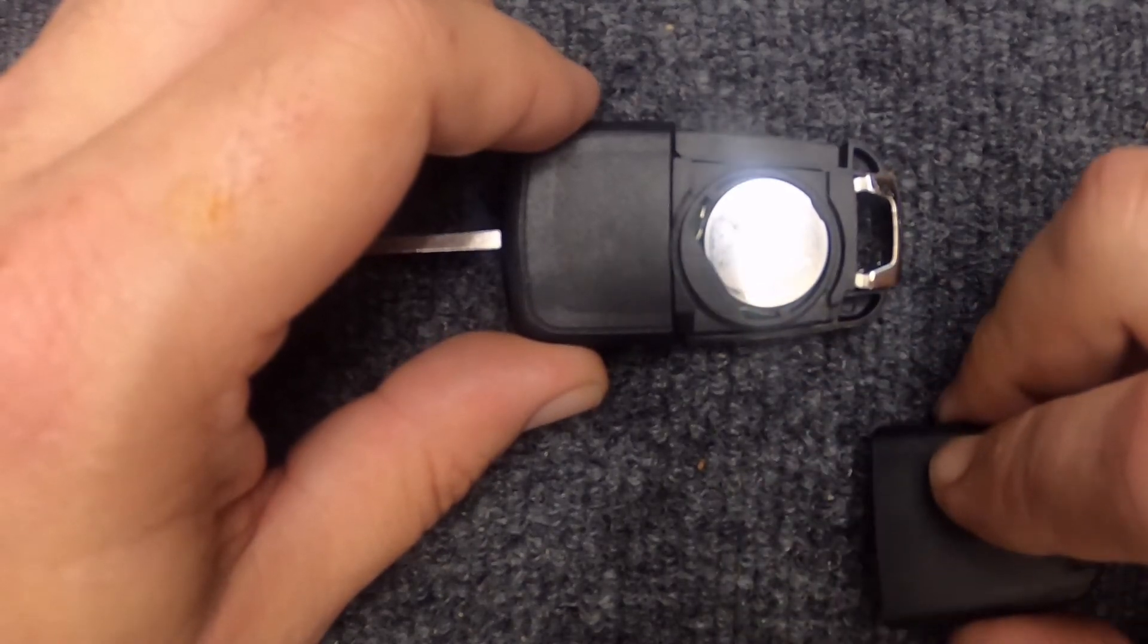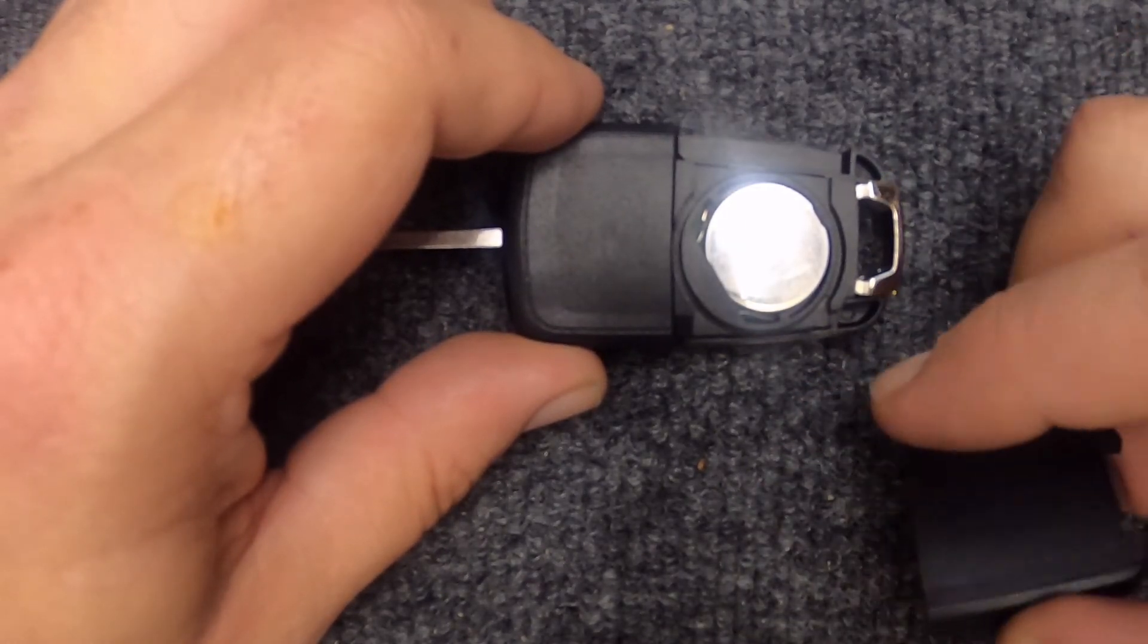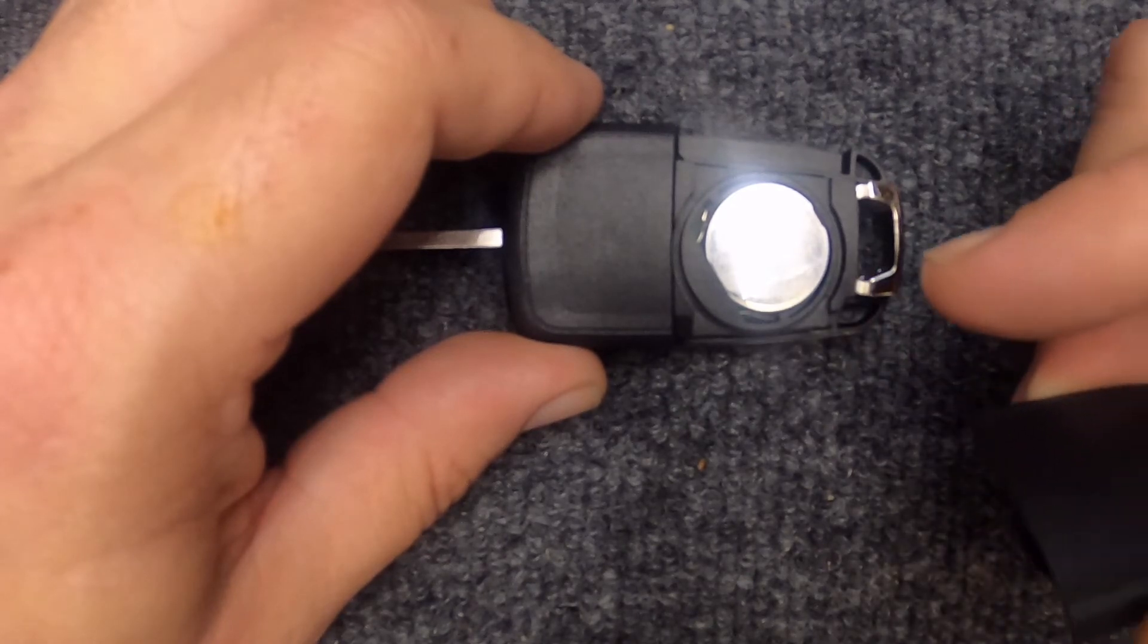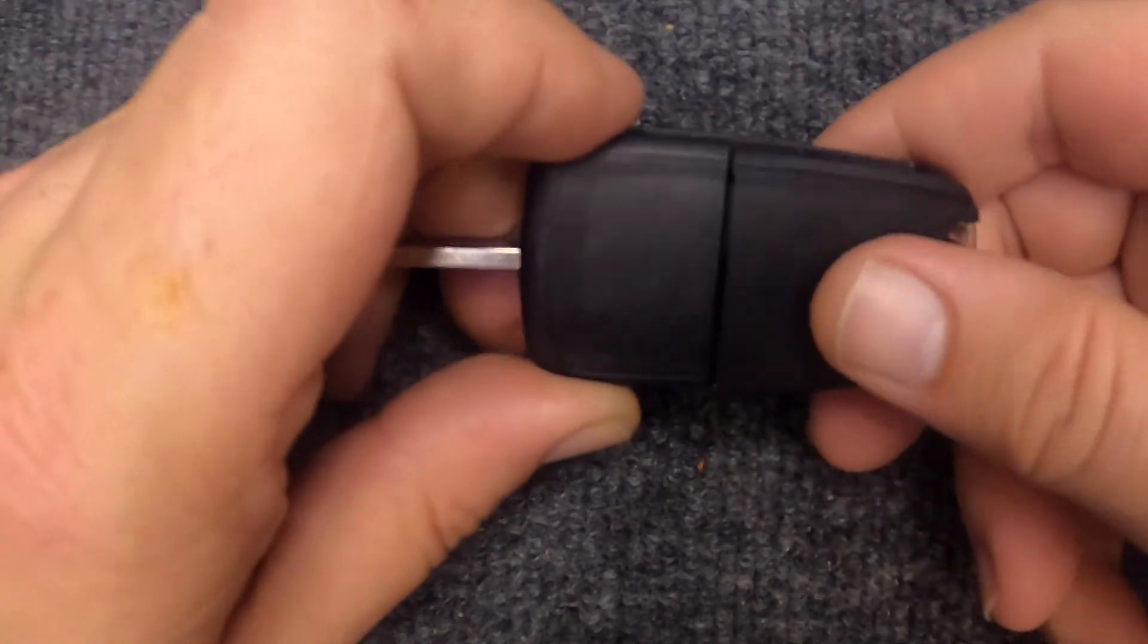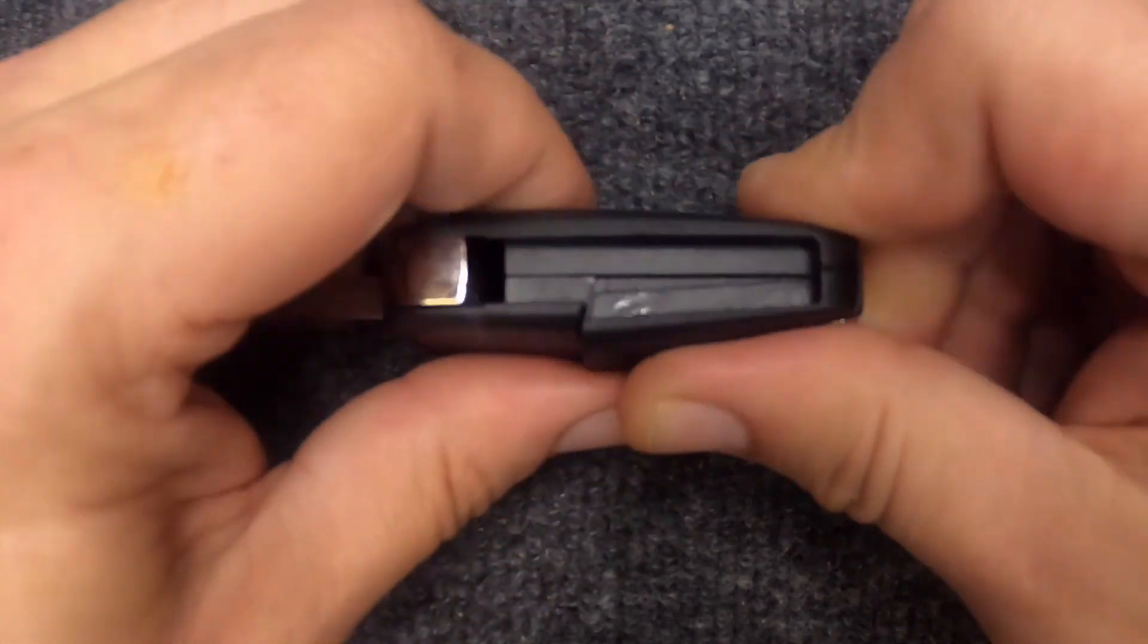If it wasn't in right, the battery would be popped up, so you'll know you need to redo it. Go ahead and take your two halves back together. We'll put the back half back on.